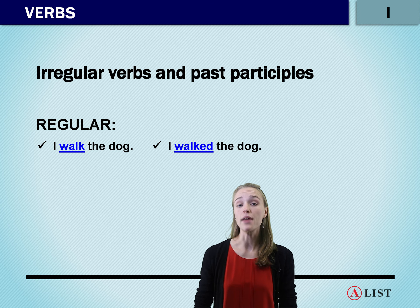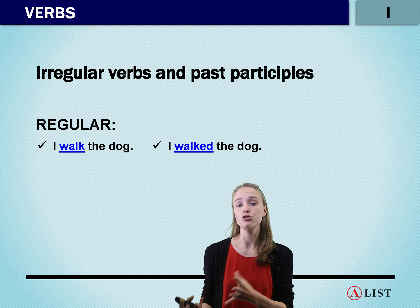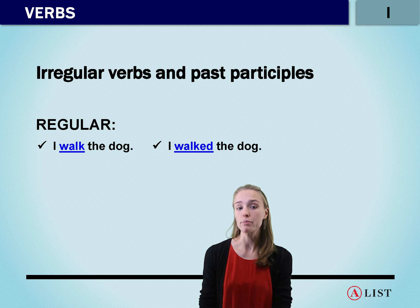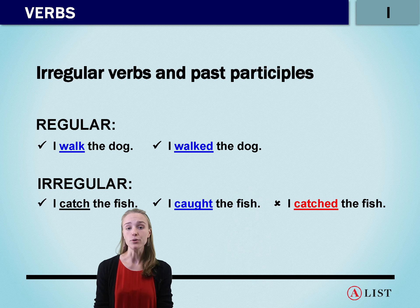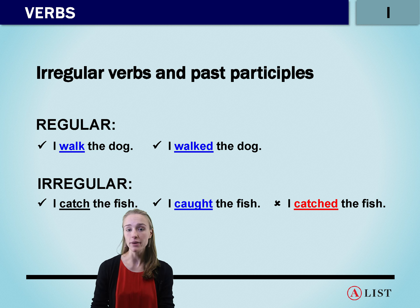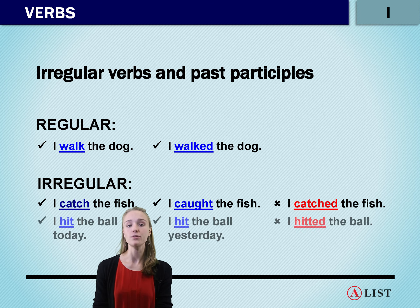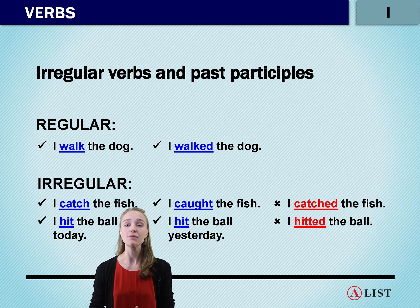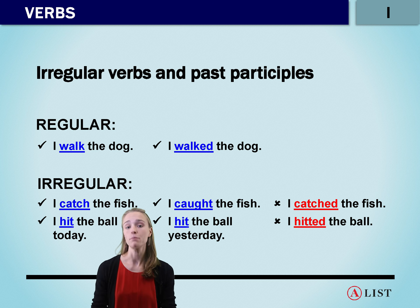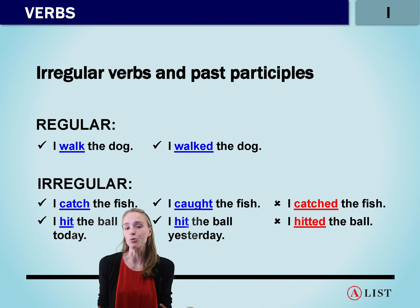Not all verbs have that regular ending though. Some verbs are irregular. This means that we actually need to change the spelling of them when we move into our past tense. One example would be 'I catch the fish' — that is our present tense. But if we wanted to do the past tense, we would have to change our spelling to 'I caught the fish.' We could not say 'I catched the fish' — does not sound great. Another example: 'I hit the ball today' or 'I hit the ball yesterday.' This one is a little unusual because we're not changing the spelling at all, but that's why it's irregular — it does not just change our ending the normal way we would expect.